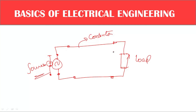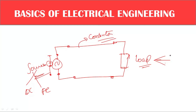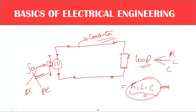In upcoming classes, we will cover conductor properties. We have sources — DC source and AC source. In electrical engineering, there are fundamentally three electrical load elements: the resistor, the inductor, and the capacitor. These load parameters — resistor, inductor, and capacitor — are very important and form the basis of almost all electrical engineering subjects.